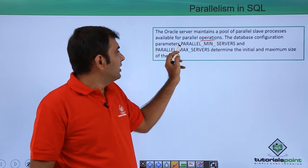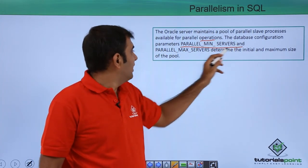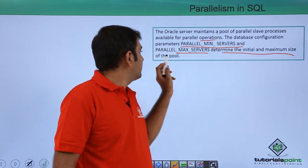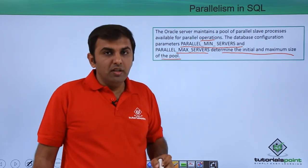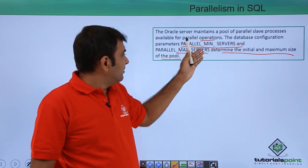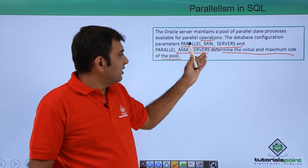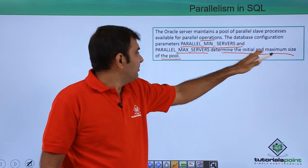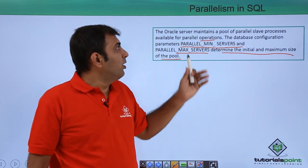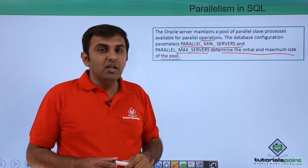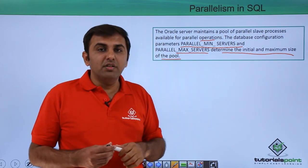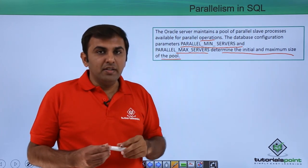The database configuration parameters PARALLEL_MIN_SERVERS and PARALLEL_MAX_SERVERS determine the initial and maximum size of the pool. These two parameters are required to set up the minimum and maximum size of the parallel slave process pool. In this session we discussed parallelism in SQL, which is more efficient than executing queries in a non-parallel environment.